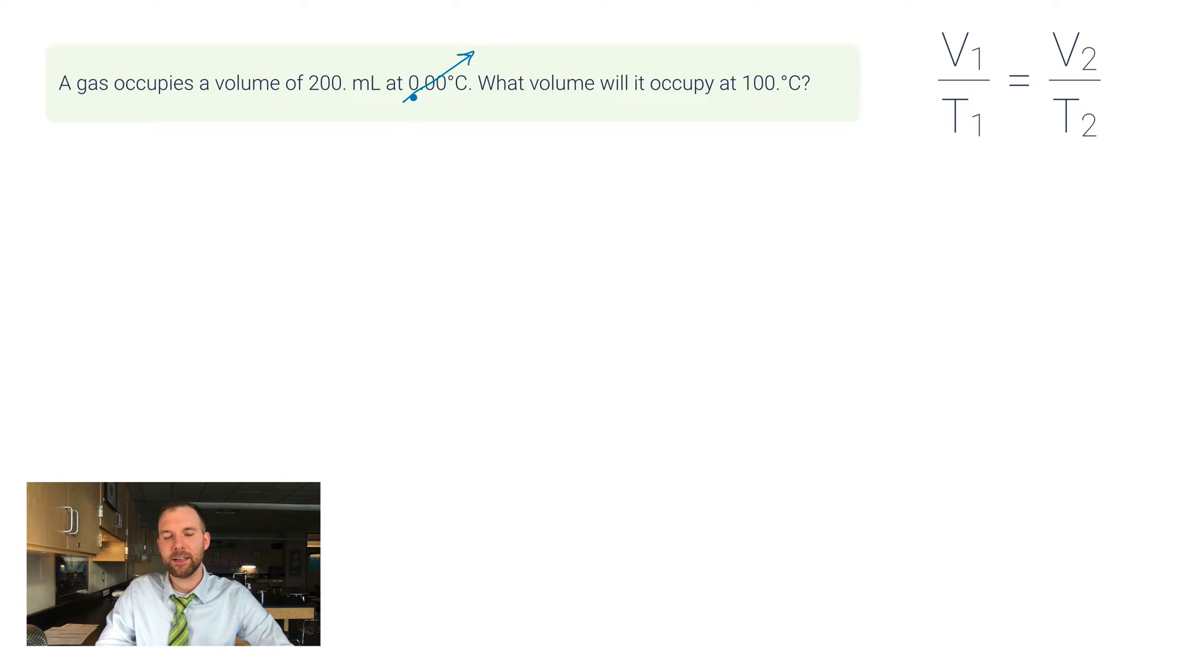So usually what I do is I draw a diagonal arrow through that so that I remember not to use these, and then what I'll do is put the Kelvin version of that answer up on the top right here. So 0 degrees Celsius, if you add 273 to that, you get 273.00 Kelvins. Over here, 100 plus 273 gives you 373 Kelvins.